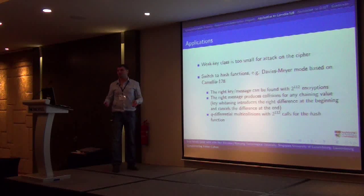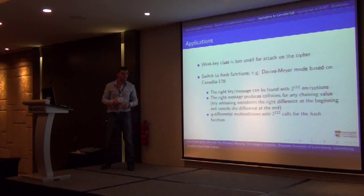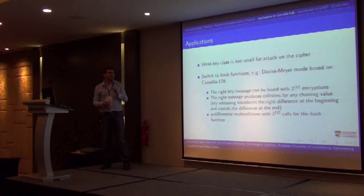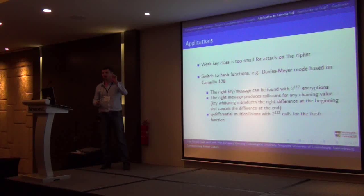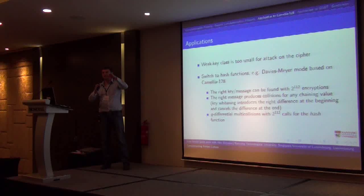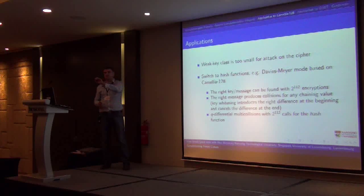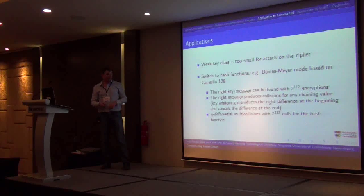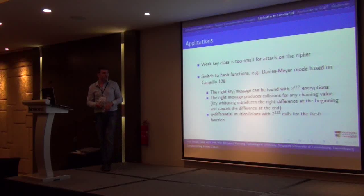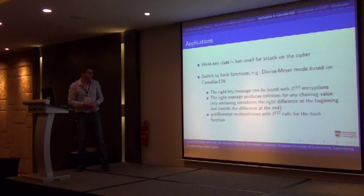One might ask: why don't we use the rebound attack? The thing is, we cannot use the rebound attack because we need a precise difference in both the input and the output. If we use rebound, in the middle you can pass those middle rounds for free, but in the output you have no idea what kind of difference you're going to get — you just know that the active S-boxes will produce some difference. That's why we cannot use the rebound attack and have to go with this more complicated approach.